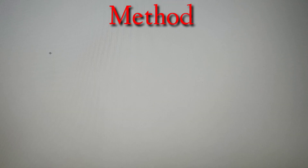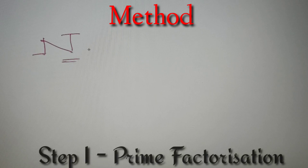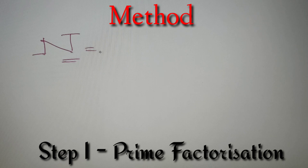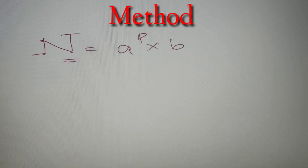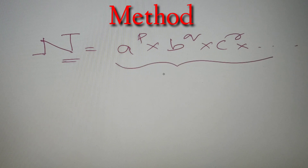Moving on with our method. Let's say we are given a number n and we have to find the number of odd factors for it. The first step is to prime factorize the given number. Prime factorizing a number means representing it as a product of its prime factors raised to arbitrary powers. So n can be represented as a raised to power p, into b raised to power q, into c raised to power r, and so on — we have taken only 3 prime factors here for simplicity.